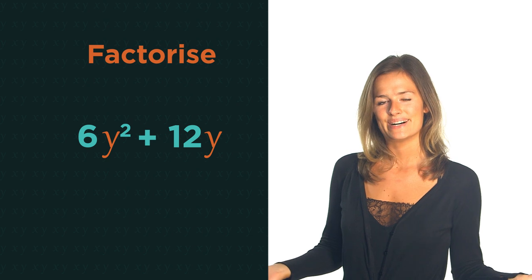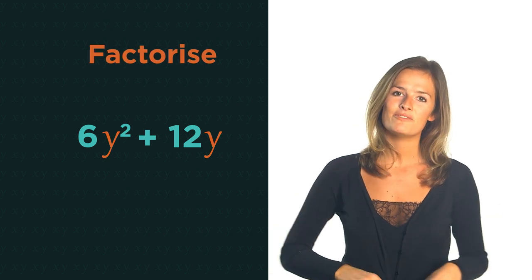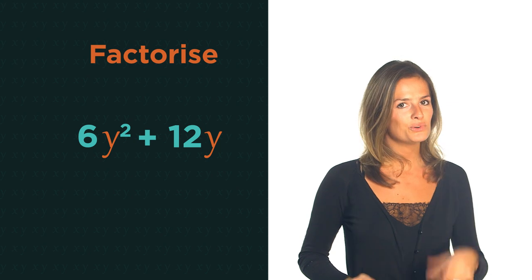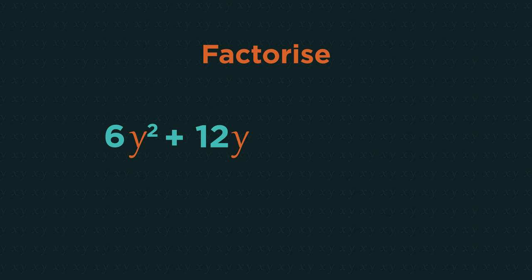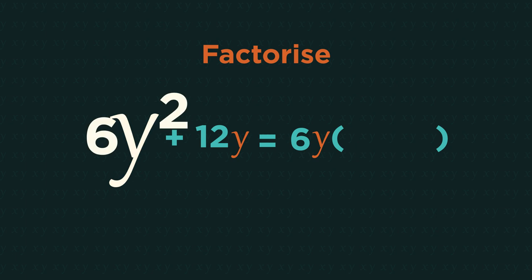So what about this example? What's the highest common factor of 6y squared and also 12y? So start with the numbers. What's the highest common factor of 6 and 12? 6, so 6 goes outside the brackets. Now what's the highest common factor of y squared and y? y, so y outside the bracket. What do we need to multiply 6y by to get 6y squared?